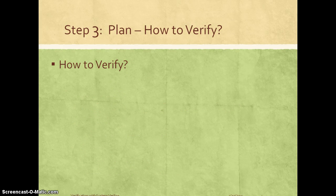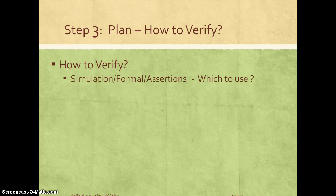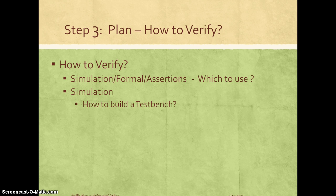Now the verification plan also has to capture how things have to be verified, in addition to what has to be verified. So we learned about different approaches like simulation and formal assertions. In this step we should think about how well all these features can be verified. Can those be verified using a simulation approach? Are there areas which work well for formal verification? What are the kind of assertions that can be coded which will help you quickly check for design correctness?